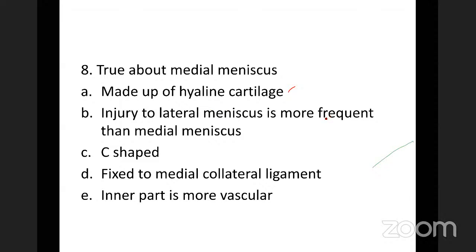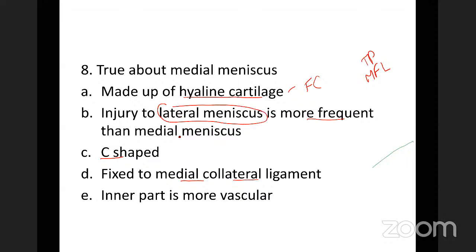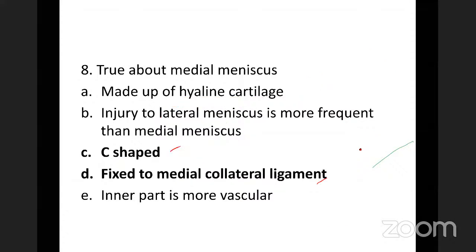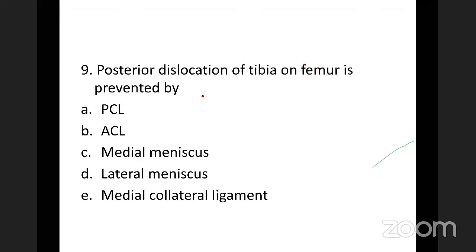MCQ: true about the medial meniscus — it is not made of hyaline cartilage but of fibrocartilage. Injury to the lateral meniscus is not more frequent. The medial meniscus is C-shaped and is fixed to the tibial collateral ligament. Its inner part is avascular, not vascular. The correct answers are it is C-shaped and fixed to the medial/tibial collateral ligament.